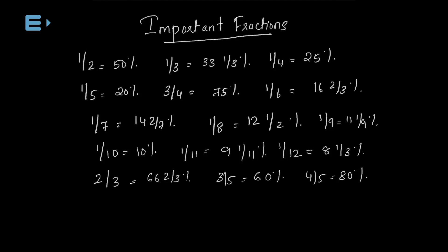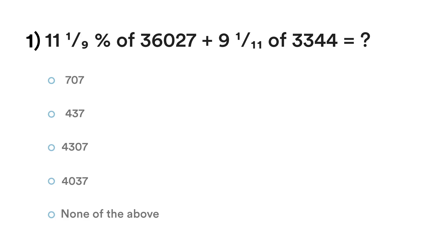Now we will see the simplification trick. Let's go to the next question. The options are displayed: first option 707, second option 437, third option 4307, fourth option 4037. How do we solve this?